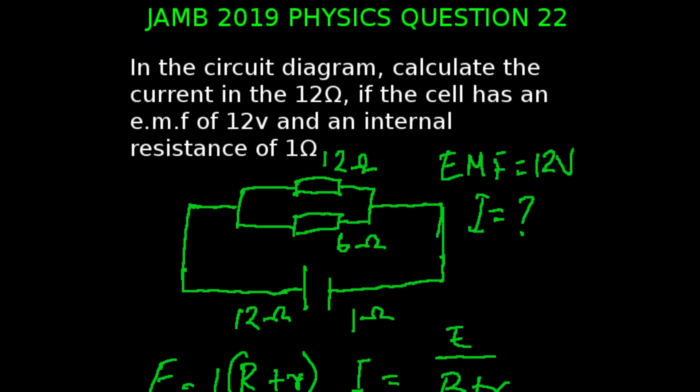Let's look at question 22 of the JAMB 2019 physics examination. In the circuit diagram, calculate the current in the 12 ohms if the cell has an EMF of 12 volts and an internal resistance of 1 ohms. In this question, we are required to calculate our current.